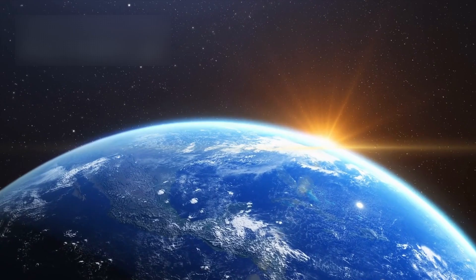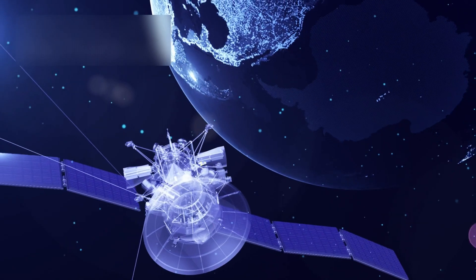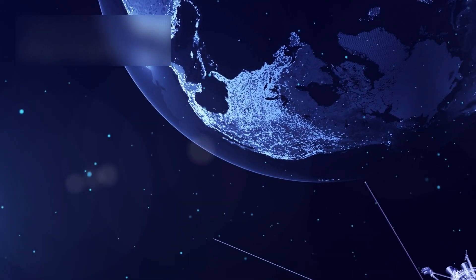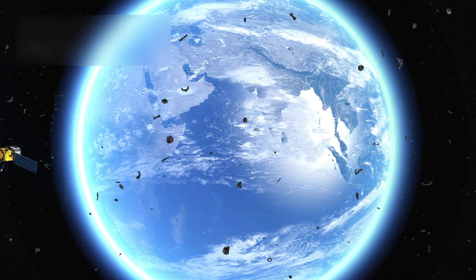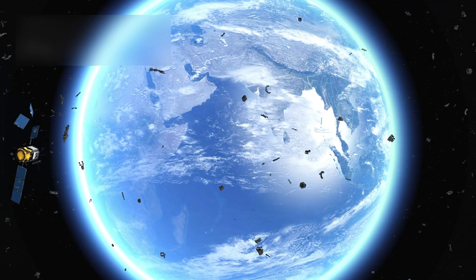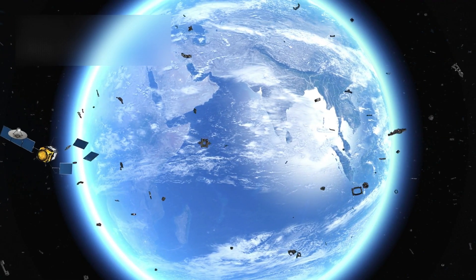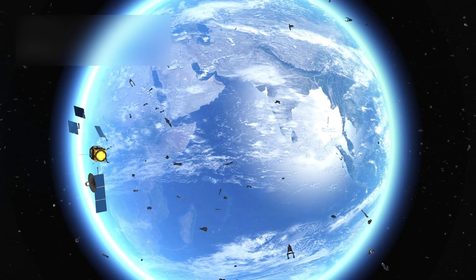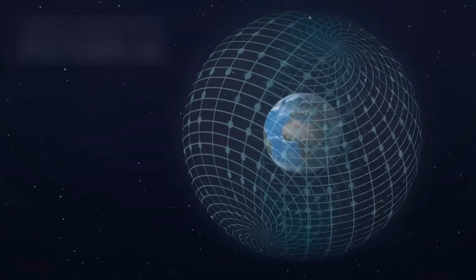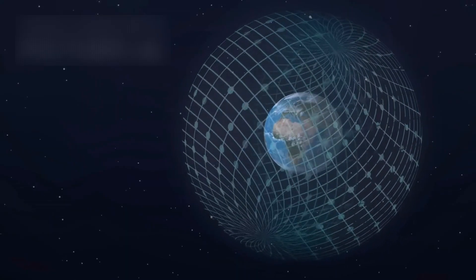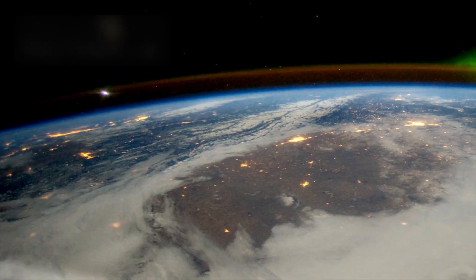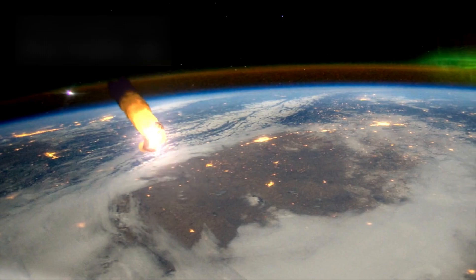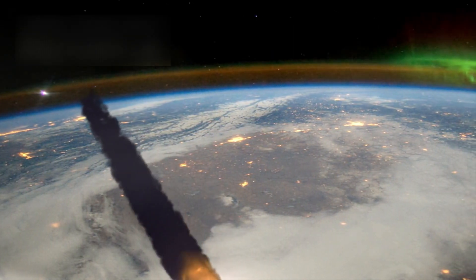But the danger is not limited to Earth's surface. Humanity's growing presence in space magnifies the stakes. Satellites in orbit could be struck by hypervelocity debris, triggering chain reactions of shrapnel similar to the Kessler syndrome, where one collision cascades into thousands more. Space stations, with their thin protective shielding, would be especially vulnerable. A fragment just a few centimeters wide traveling at tens of kilometers per second could puncture a habitat, endangering lives instantly.